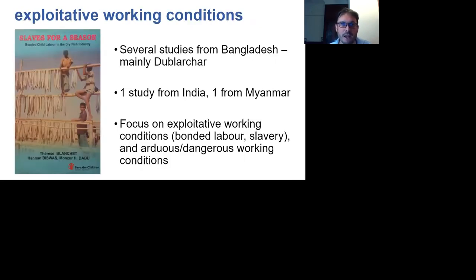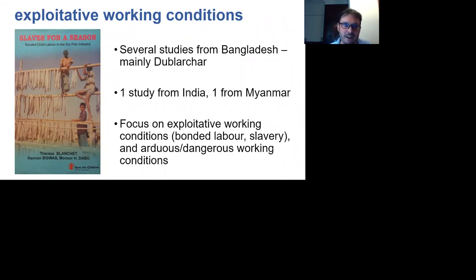The next subset is studies dealing with exploitative working conditions. These are predominantly focused on Bangladesh. The classic study here is the book 'Slaves for a Season: Bondage and Child Labor in the Dried Fish Industry' — a really detailed anthropological study of bonded labor and slave-like labor on the island of Dublarchar. There are several other studies that have taken place on Dublarchar. There are much fewer studies from elsewhere in Bangladesh looking at labor conditions, and another study from India looking at arduous working conditions and another from Myanmar, but really nothing outside of these areas.